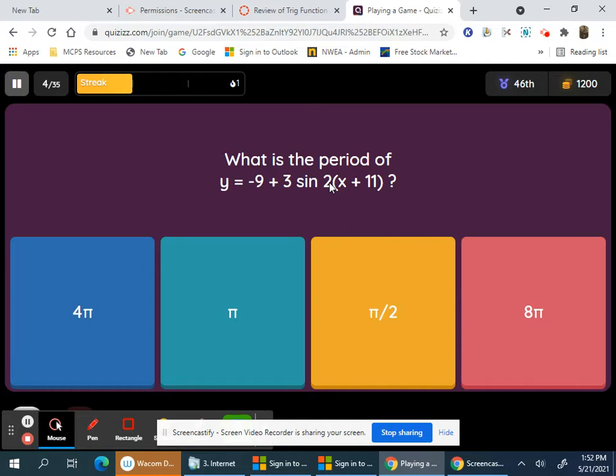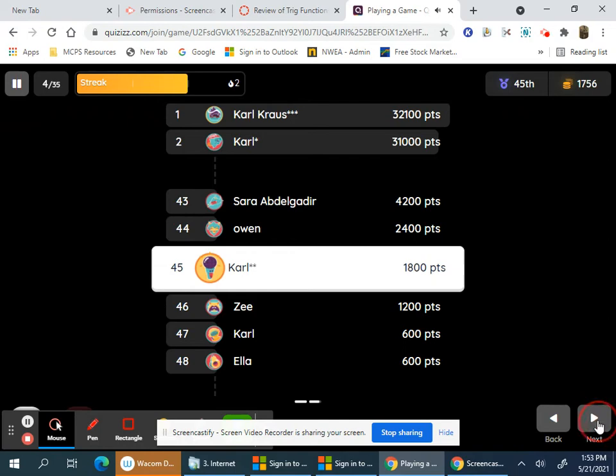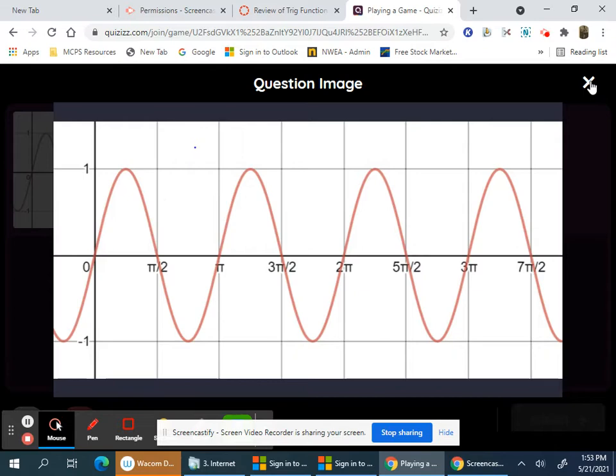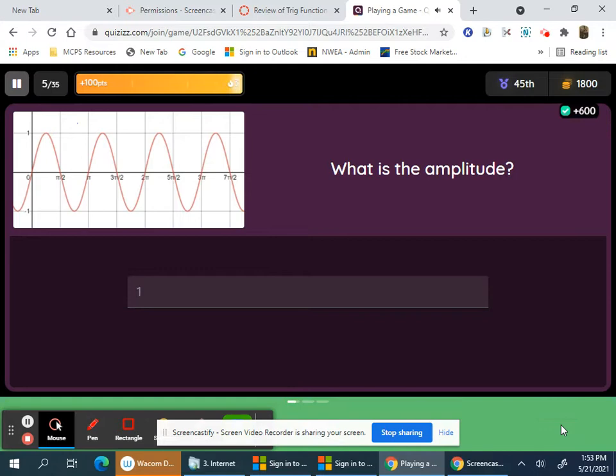What's the period of this? It would be 2 pi over 2, which is pi. What's the amplitude here? It's 0 to 1, so 1. You have to type that one in.